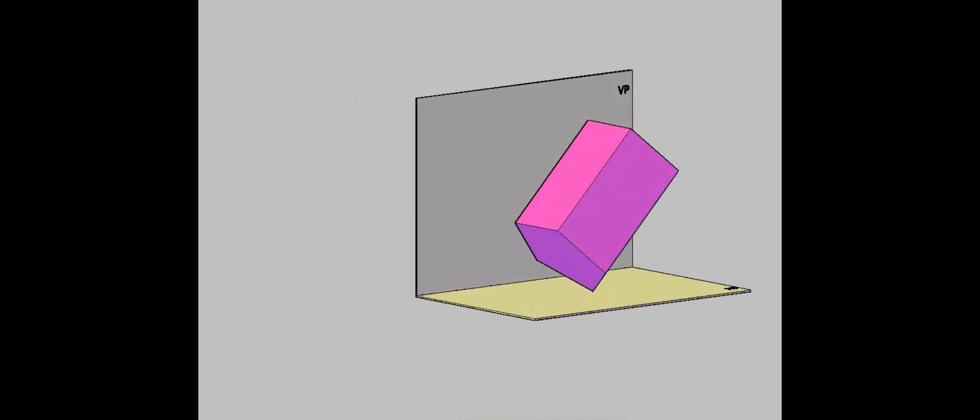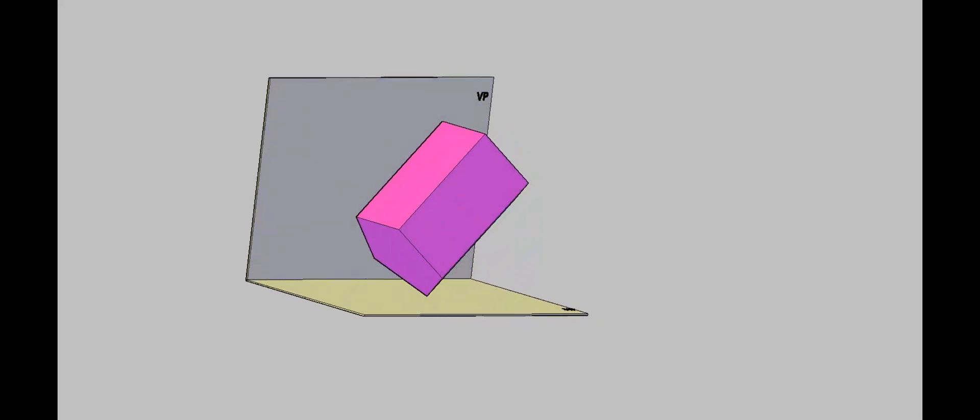The prism is resting with its base corner. Since a pentagon has odd number of sides, the base edge opposite to this resting corner will be perpendicular to VP.